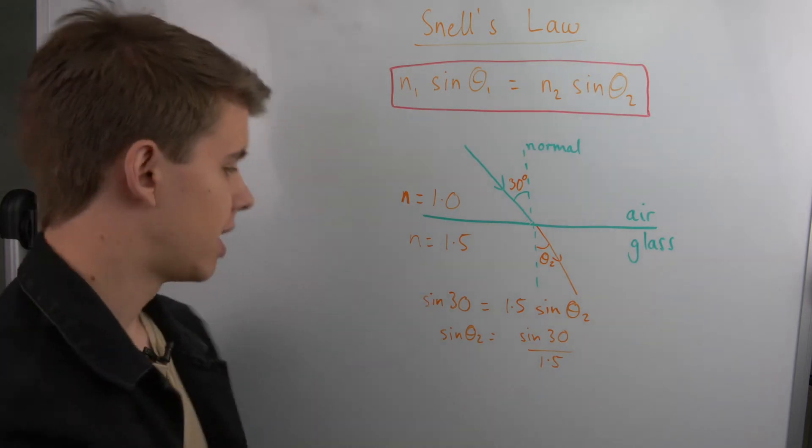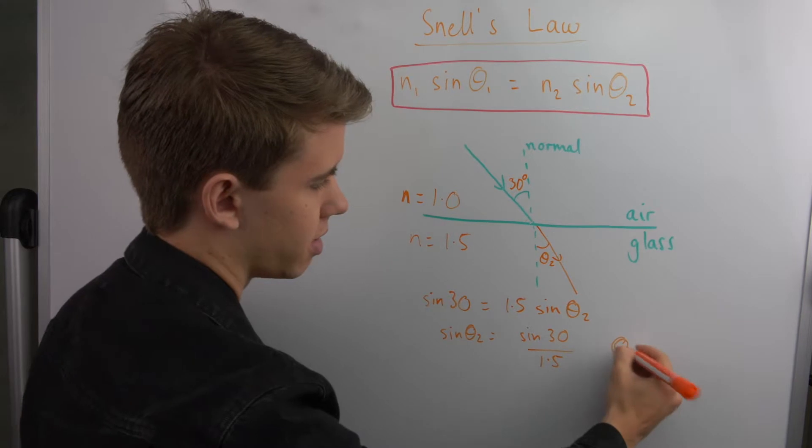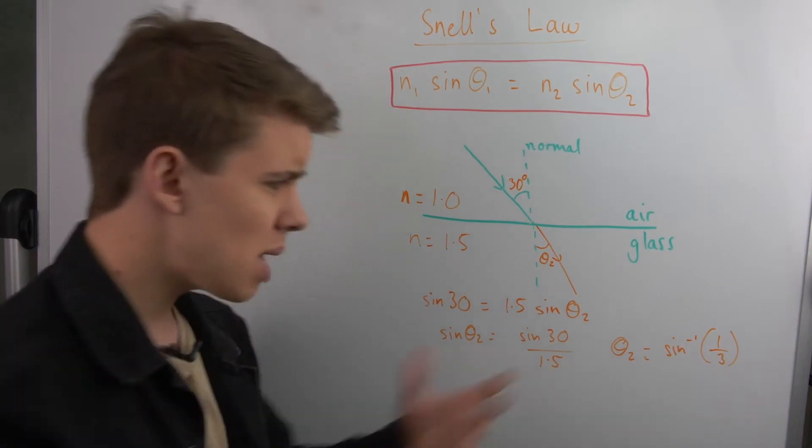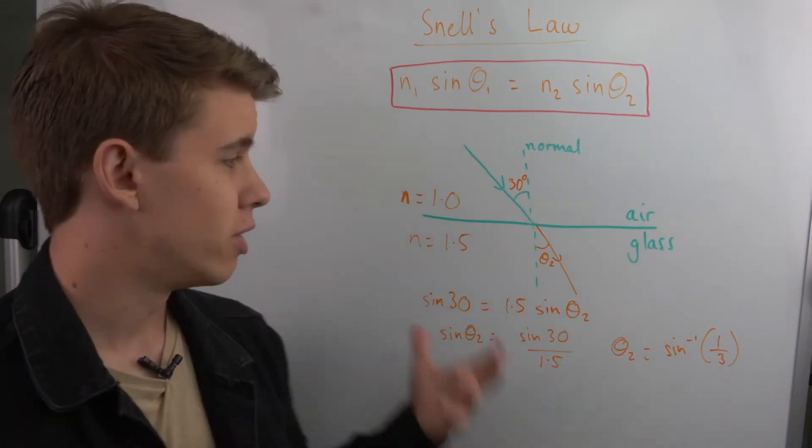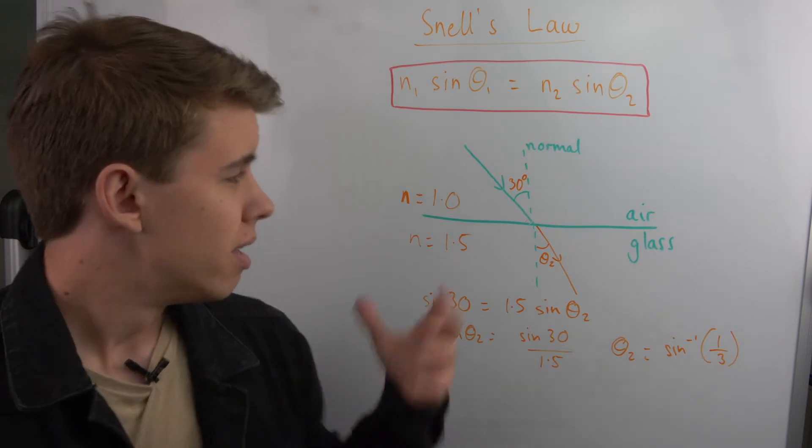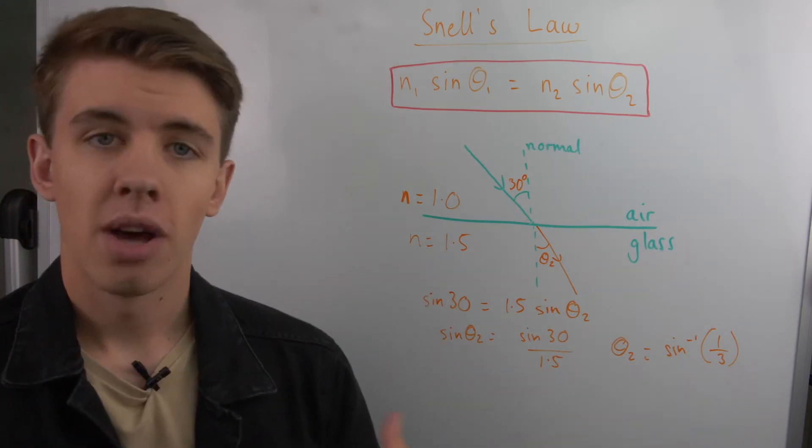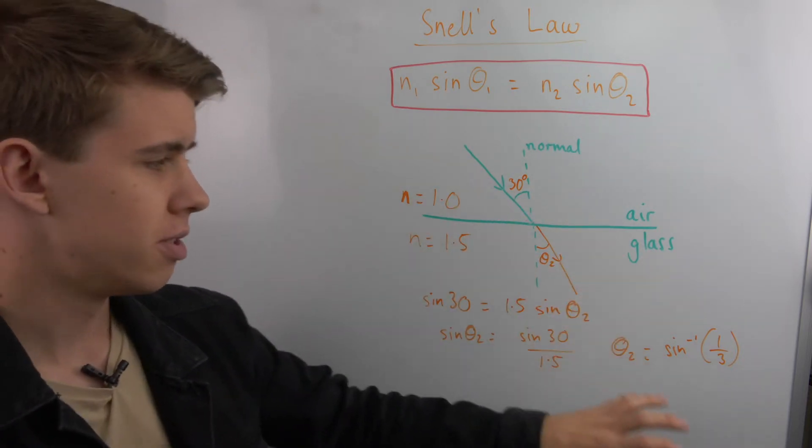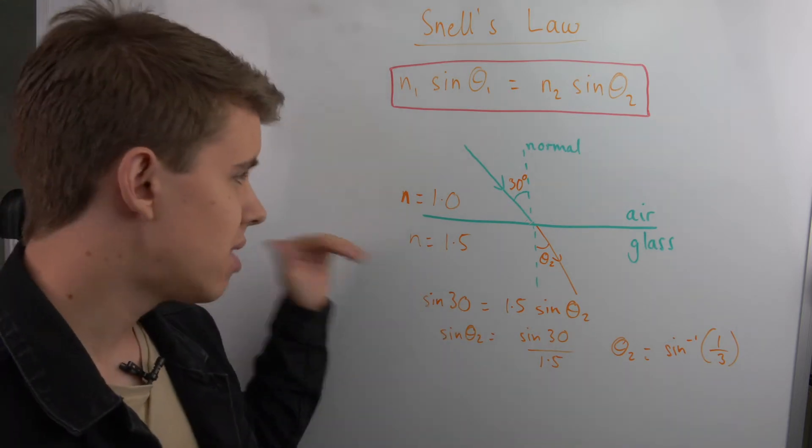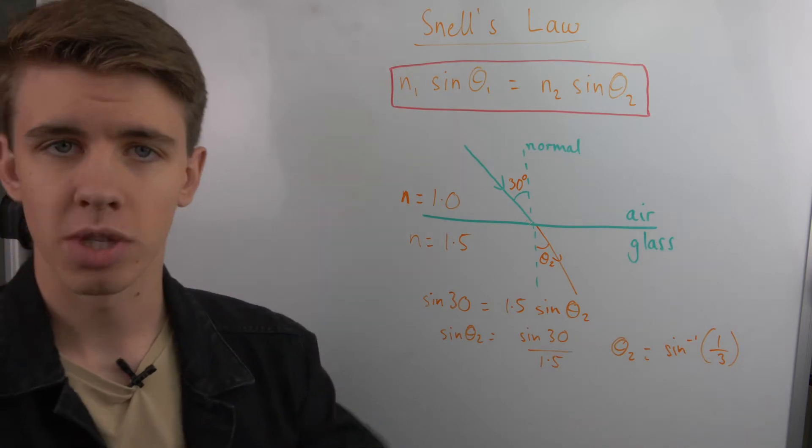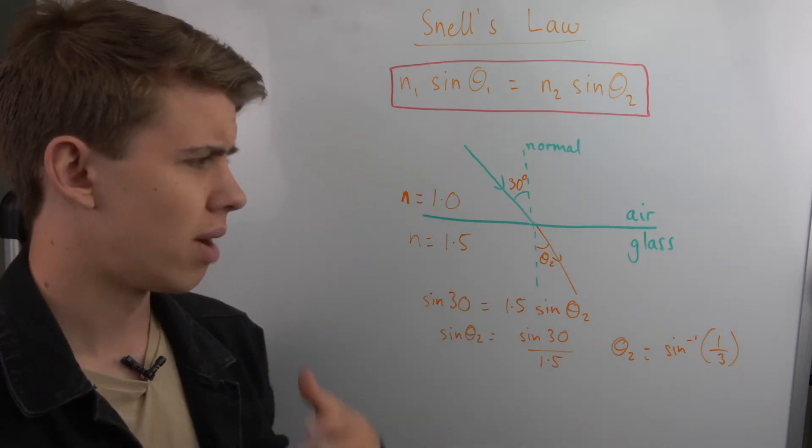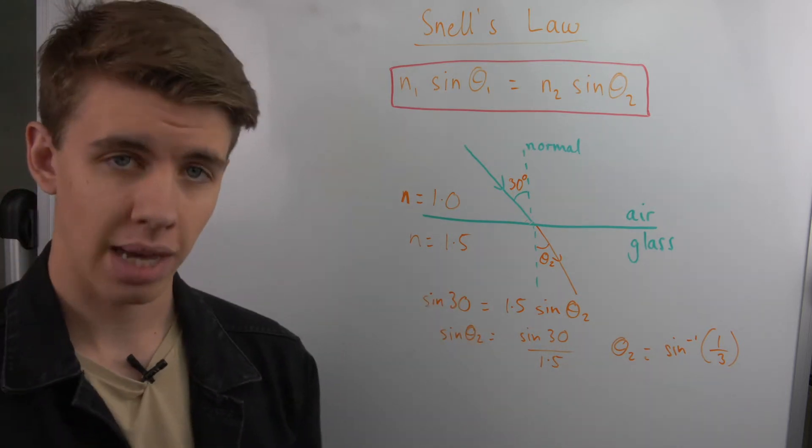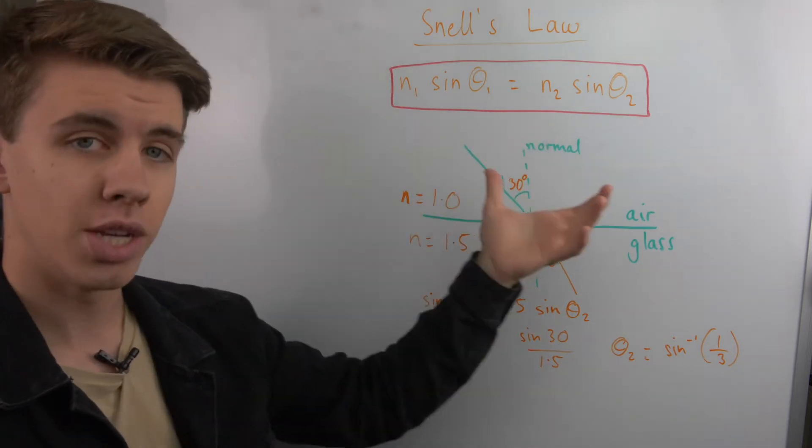Then your trigonometry from GCSE comes back in, and to find theta 2 we're just going to say that theta 2 is the inverse sine of 1 over 3. Put that into a calculator, that will give you your answer, and then you know the angle that is refracted at. This topic then goes on into further things such as total internal reflection, so these types of calculations will be a gift in your exam. They will always be this kind of simple substitution.